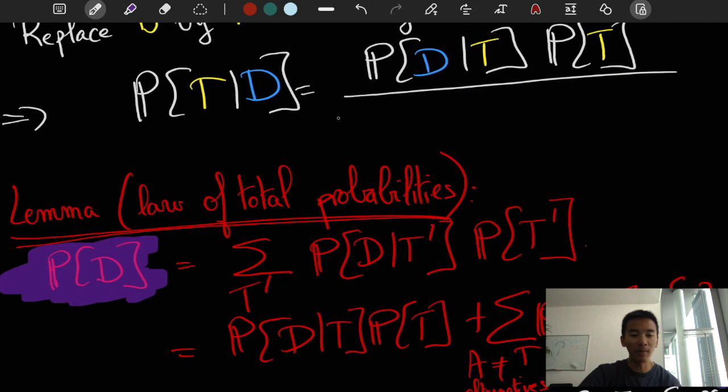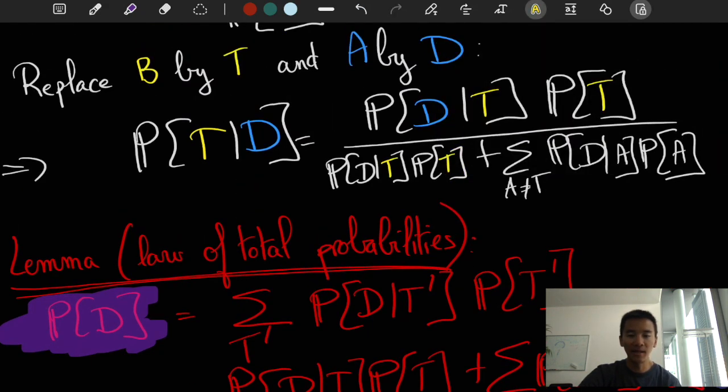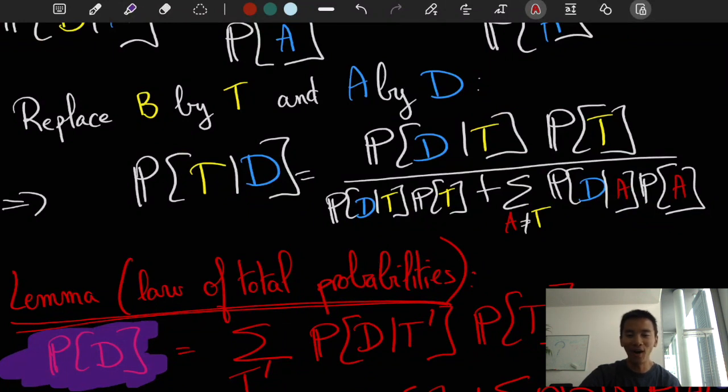And finally, the lemma then straightforwardly implies Bayes' theorem. So, there you have it, Bayes' theorem in its most beautiful form, I would argue.